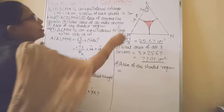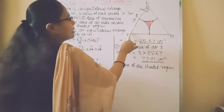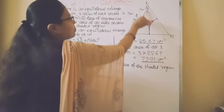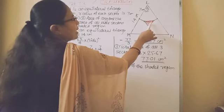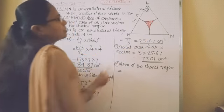Now students, from this triangle L, M, N, if you remove these 3 sectors, you will get this remaining shaded portion.